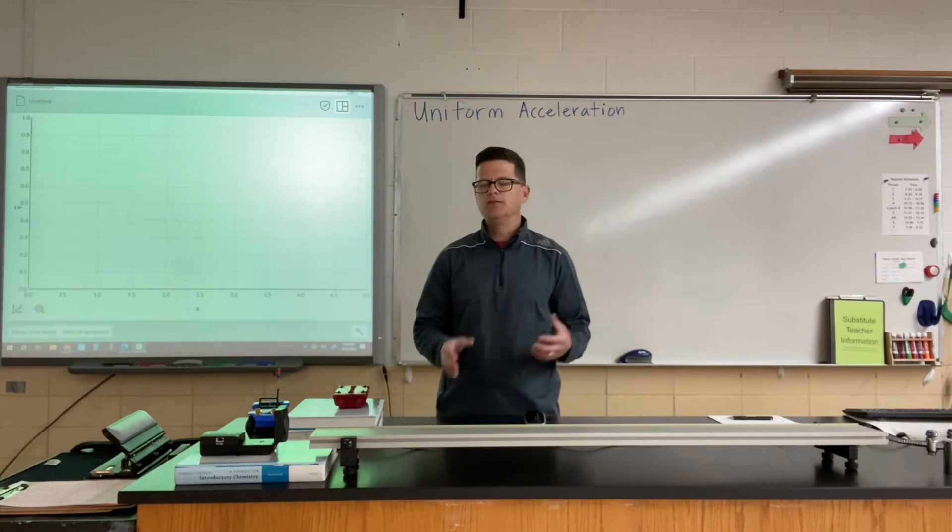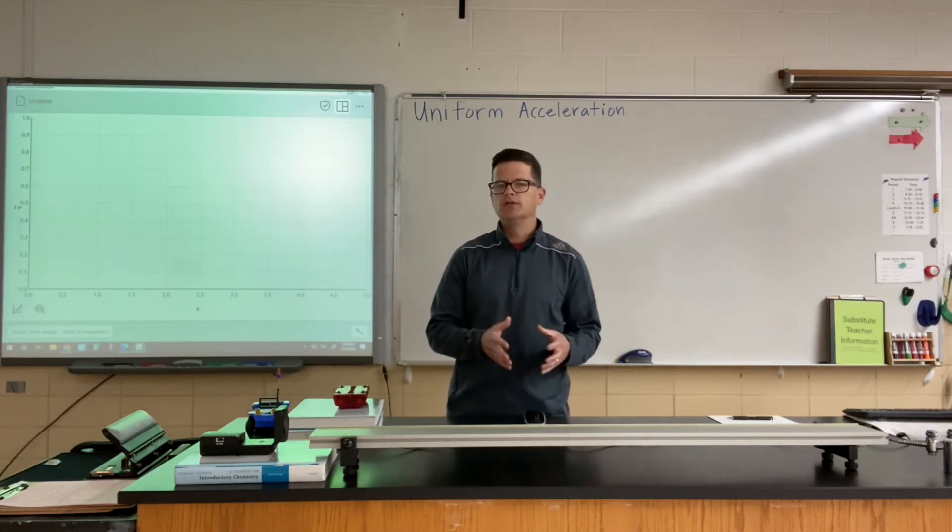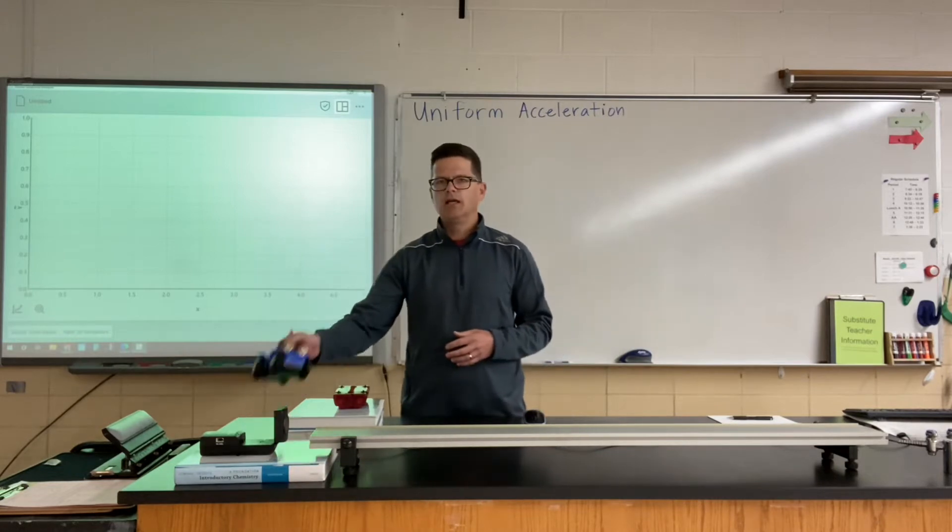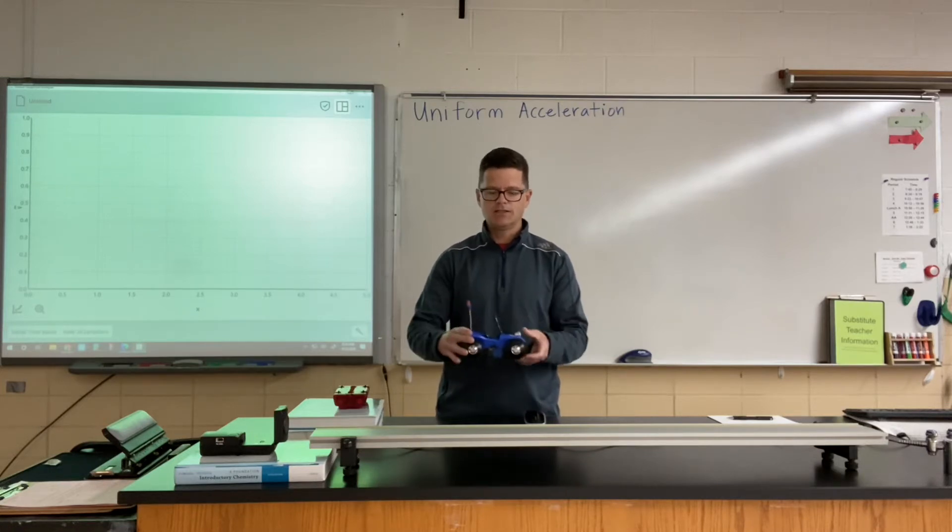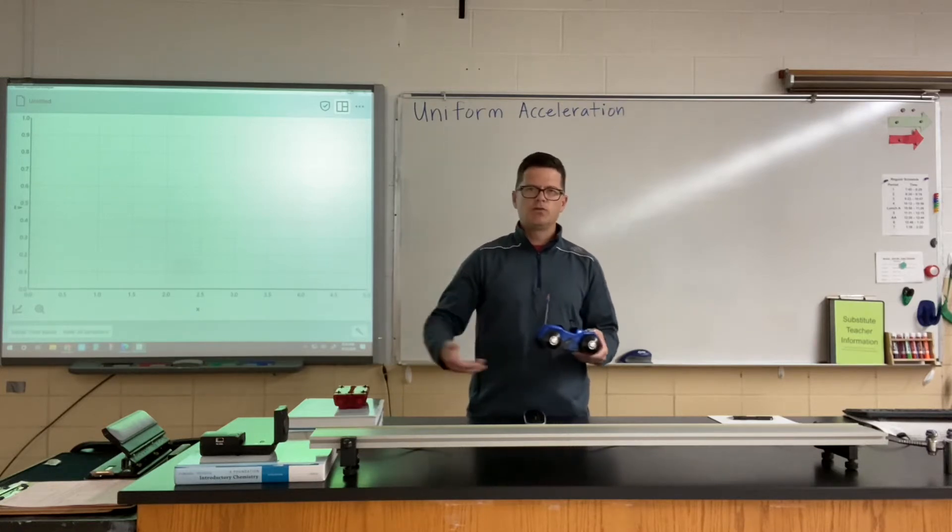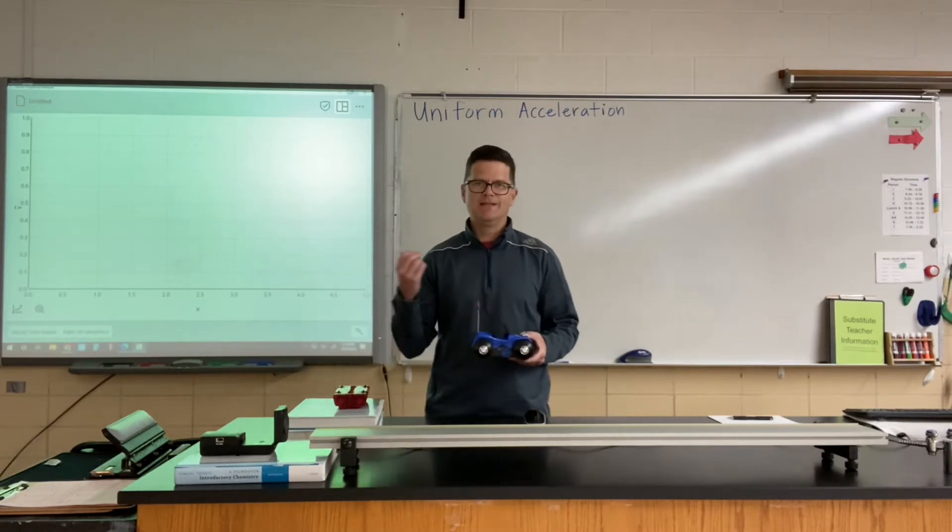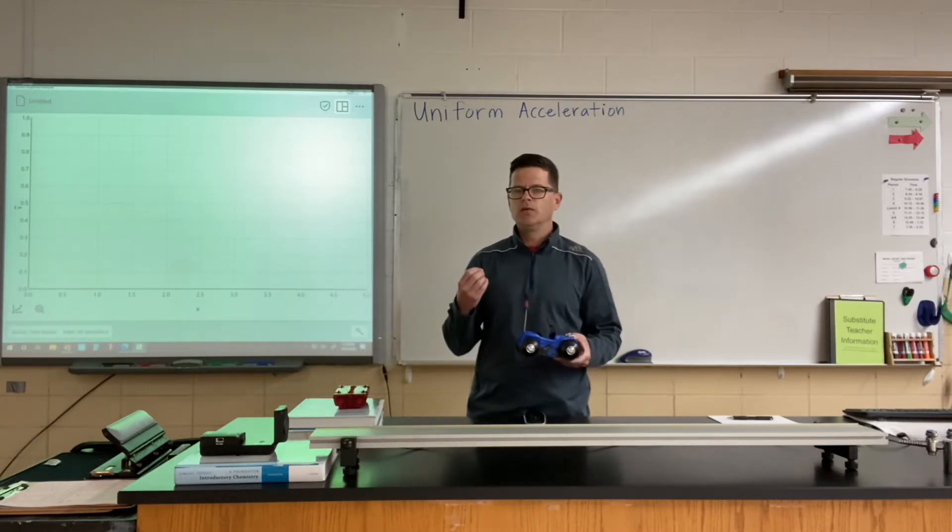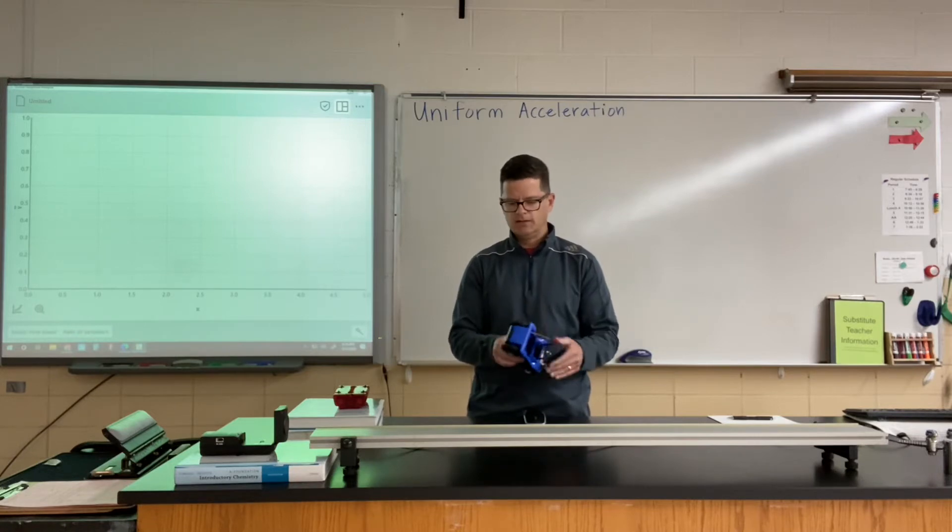Before we look at uniform acceleration, we studied constant velocity motion. Constant velocity would mean straight line motion at a steady speed, and we used battery operated toy cars to generate data. Through discussion we realized that if we can gather position values and time values, we can generate graphs and mathematical models to understand constant velocity. This is what constant velocity looks like.